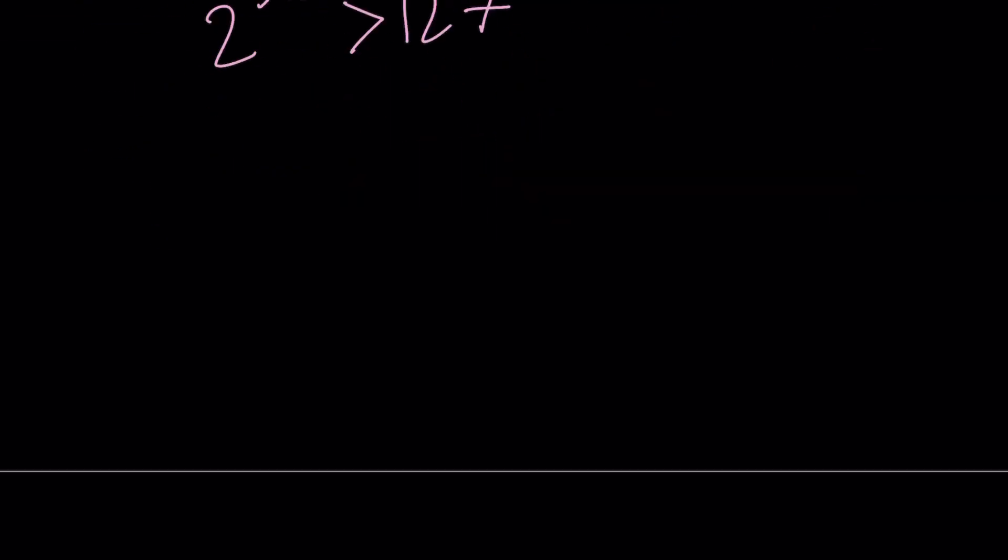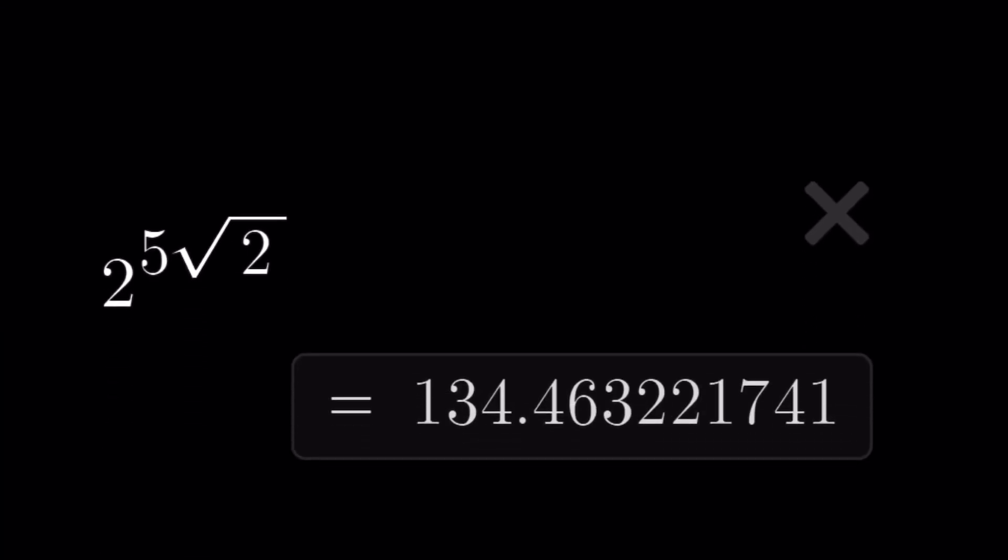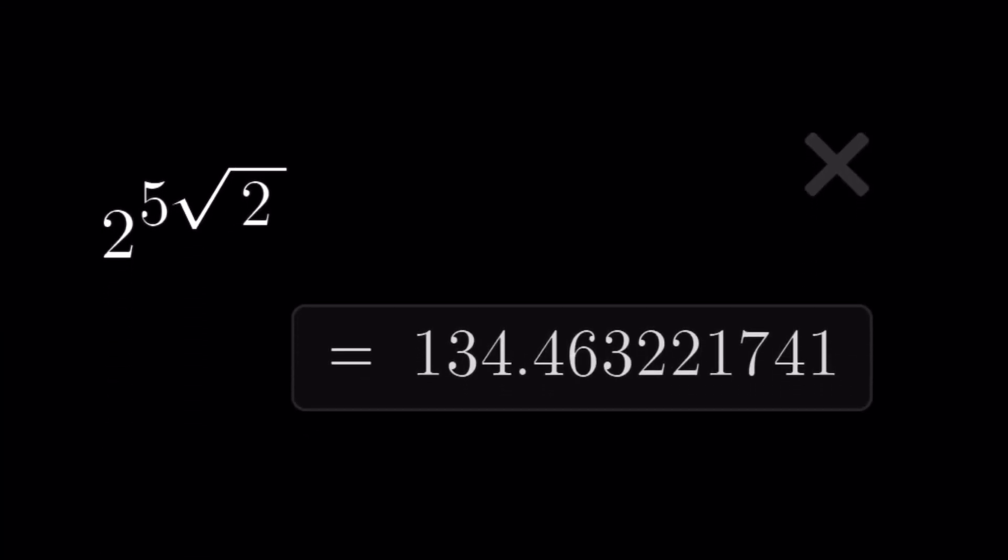Let's go ahead and take a look at numerical values. I mean, the numerical value, right? Because there's only one value we need to worry about. And that is 2 to the power of 5 root 2, which happens to be approximately 134. Pretty close to 134. Maybe 0.5, you can say, if you want. But that's it.